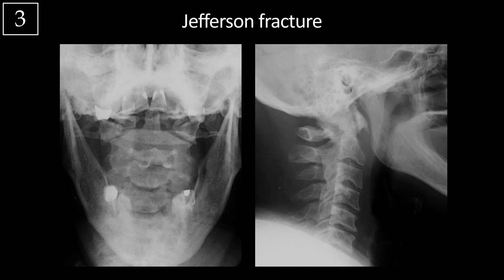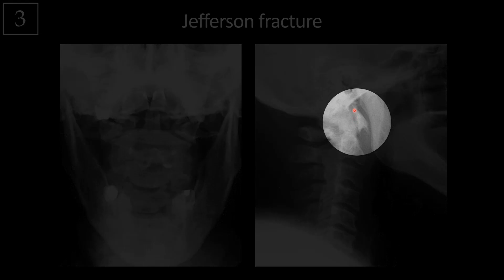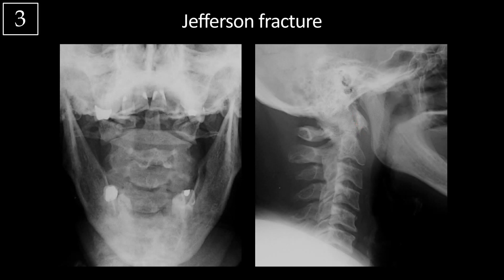This is an axial loading injury. The classic history is when a patient dives headfirst into shallow water, causing a burst fracture of the C1 vertebral body — the atlas. The lateral view is important because you want to look at the atlantodentate interval — the predentate space — which is normally less than three millimeters in adults and less than five millimeters in children. If this is widened, it may indicate an associated injury to the transverse atlantal ligament, which is important because if that ligament is intact, it may allow the fracture to be treated conservatively. In this case, the atlantodentate interval is normal.